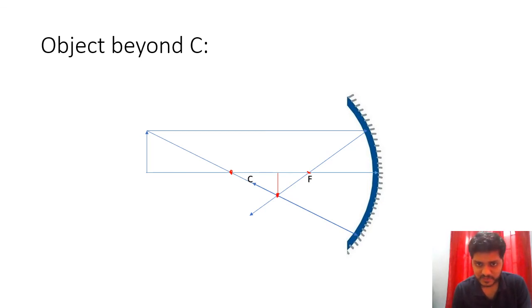So the point of intersection between these two rays will be having the image. So we know that this is the top part. So its image will be formed here. And this bottom part, as it is already on principal axis,